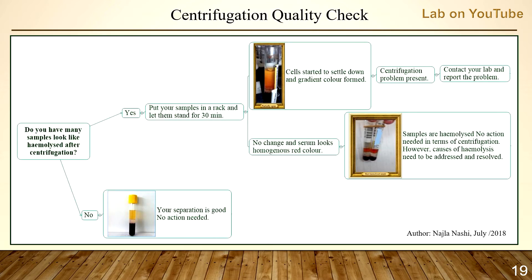To determine if you have a partial spin sample problem, follow this chart. Do many samples look hemolyzed after centrifugation? If no, separation is good — no action needed. If yes, place samples in a rack and let them stand for 30 minutes. If cells start to settle and a gradient color forms, a centrifuge problem is present — contact your lab. If no change and serum looks homogeneously red, samples are hemolyzed; causes of hemolysis need to be addressed.